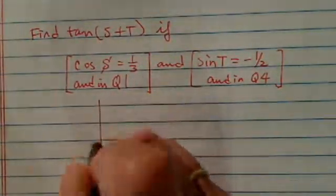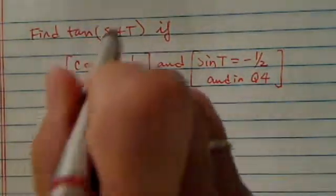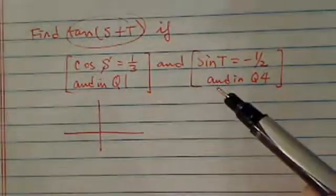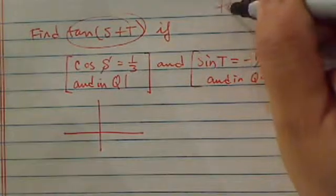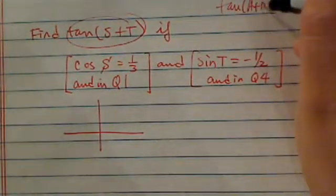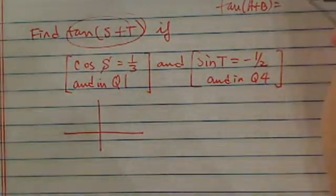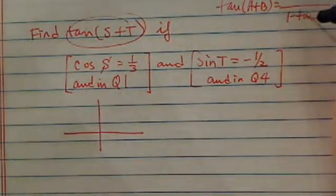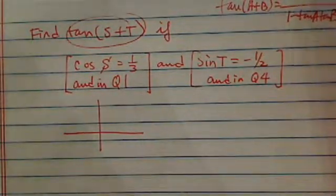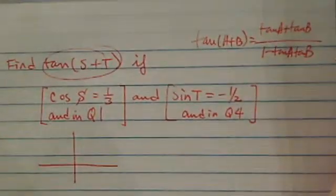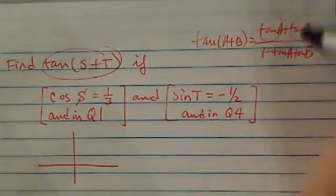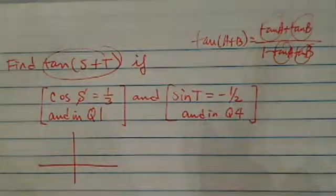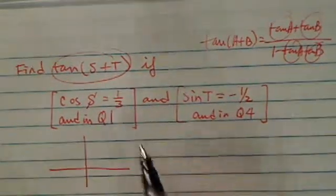So the first thing we're going to do is find tangent, because as you know, in order to use the formula, which is tangent of A plus B equals tangent A plus tangent B divided by one minus tangent A tangent B. So in order to use this formula, we will have to know each tangent value of S and T. So let's find that.